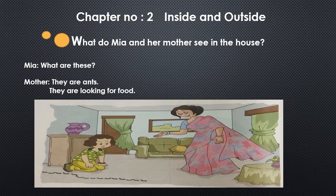What do Mia and her mother see in the house? In the picture you can see a small girl named Mia and her mother. Both of them have seen something in the house. Please read along with me: 'Mia: What are these? Mother: They are ants. They are looking for food.' You can see black-coloured ants on the floor in a straight line. Mia is asking her mom what is going along the floor in a line.